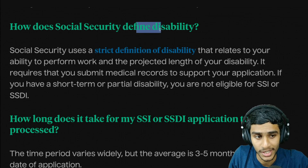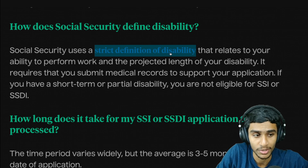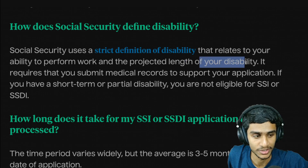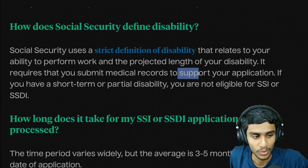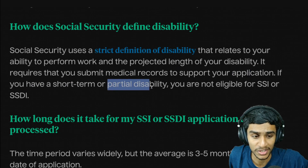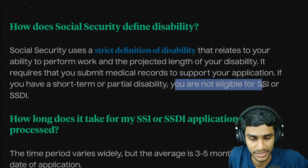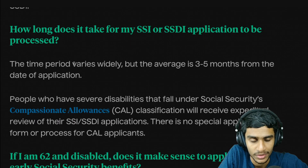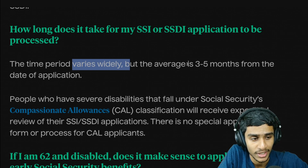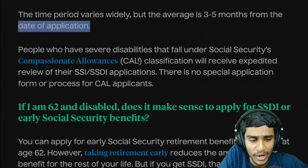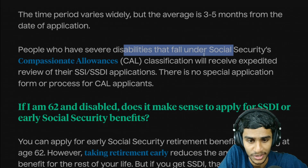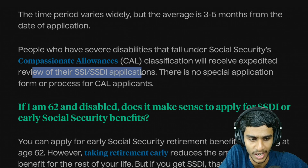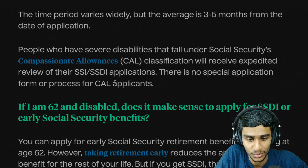Social Security uses a strict definition of disability relating to your ability to perform work and the projected length of your disability. It requires that you submit medical records to support your application. If you have a short-term or partial disability, you are not eligible for SSI or SSDI. Processing time varies widely, but on average it takes around three to five months from the date of application. People with disabilities under Social Security's Compassionate Allowance classification receive an expedited review, with no special application required.